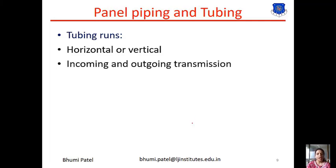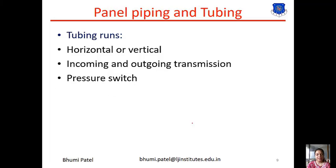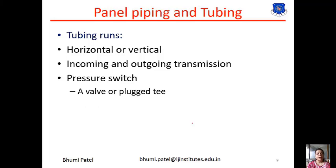The incoming and outgoing transmission lines should be terminated with the fitting in a bulk head bar at the rear of the control panel. Now, for the pressure switch, each auxiliary pressure switch or similar device which requires testing may be provided with a two-part valve or plug T, and the next one is the tube fitting valve.